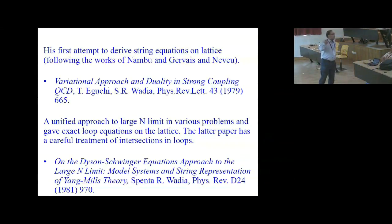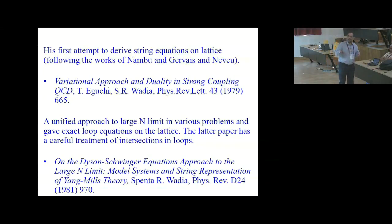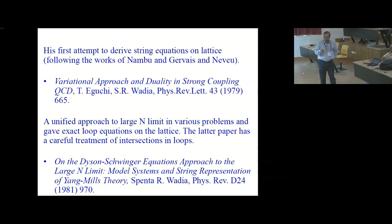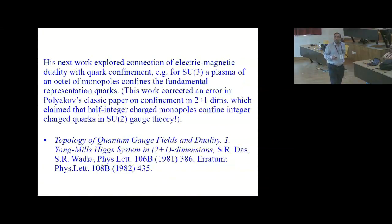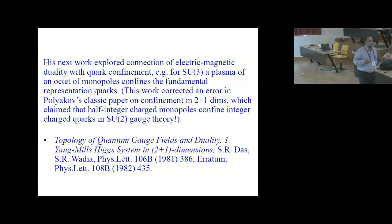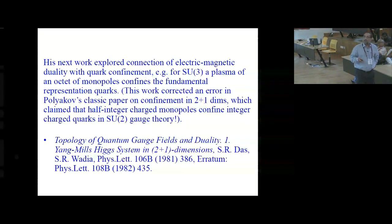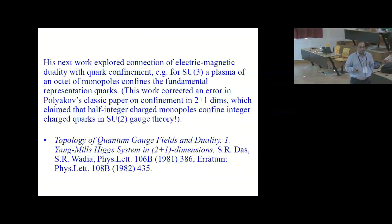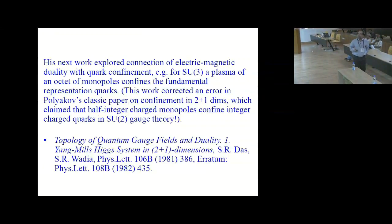After this, Spenta directly attacked confinement using the idea of the dual superconductor — that the vacuum in confining gauge theories is a dual superconductor in which monopoles condense, leading to charge confinement. In this work with Sumit Das — I think this was the first work they did together — they showed that a plasma of an octet of SU(3) monopoles in an SU(3) gauge theory leads to confinement of quarks in the fundamental representation. This also corrected a certain error in a classic paper by Polyakov, in which he had argued that half-integer charged monopoles confine integer-charged quarks in SU(2) theory, which we now know is not right.